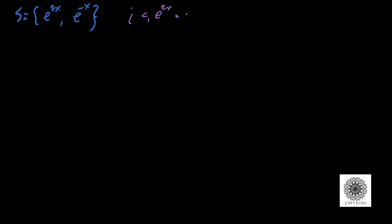For the first example, consider the set {e^(2x), e^(-x)}. The question is: can we find c1 and c2, not both zero, such that c1*e^(2x) + c2*e^(-x) = 0 for all x? With just two functions it's fairly easy to see that's not going to be possible — you would need both c1 and c2 to be zero.